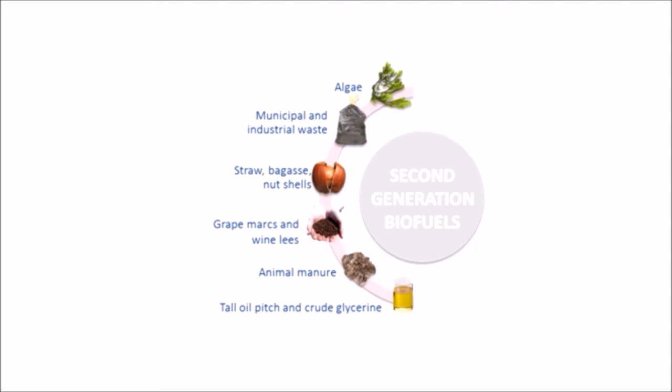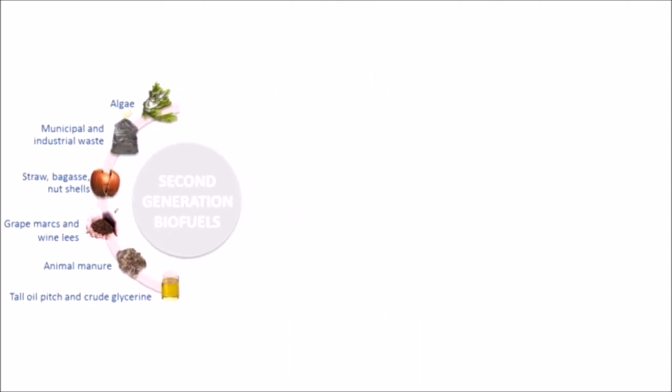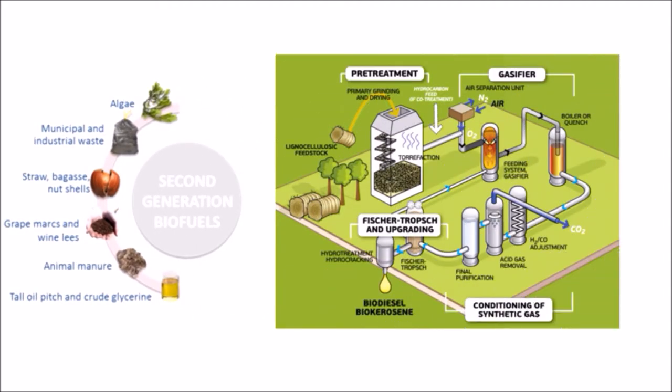The main time the nourishment harvests can go about as second generation biofuels is whether they have officially satisfied their sustenance reason. For example, squander vegetable oil is a second generation biofuels on the grounds that it has as of now been utilized and is no longer fit for human utilization. Virgin vegetable oil would be an original biofuel. Second generation biofuels are gotten from various feedstock.